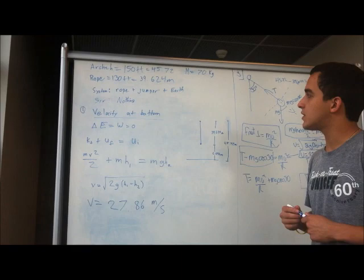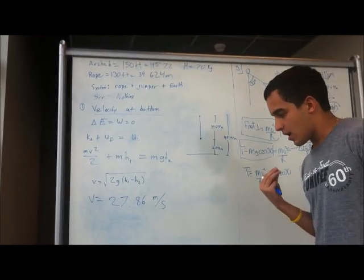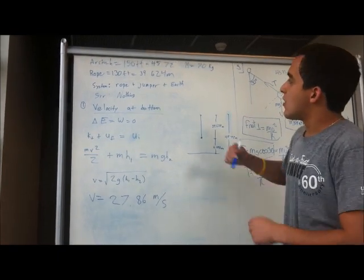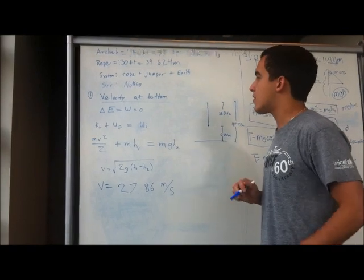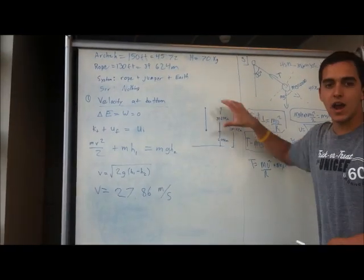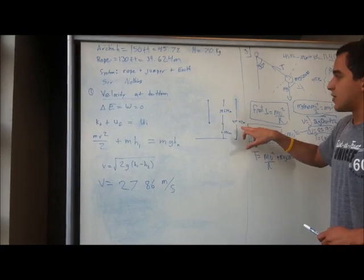First we are going to analyze the velocity when the jumper is right at the lowest point. Our system includes the rope, jumper and earth, so there is no external work. Here we have a diagram that shows the measurements in meters.